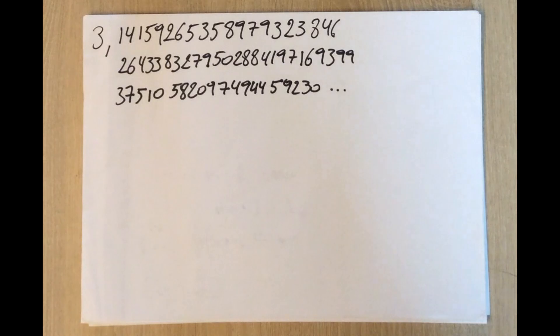I'm interested in numbers appearing multiple times in this decimal expansion. It's conjectured, not proven yet, that every possible number appears at least once in the decimal expansion of pi, but it's not proven yet.